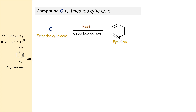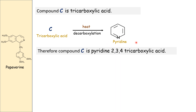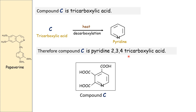Compound C is a tricarboxylic acid. Upon decarboxylation it gives pyridine as the product. Formation of that product indicates it must be pyridine-2,3,4-tricarboxylic acid. The COOH groups are present at positions 2, 3, and 4 of the pyridine nucleus. That is the structure for compound C.